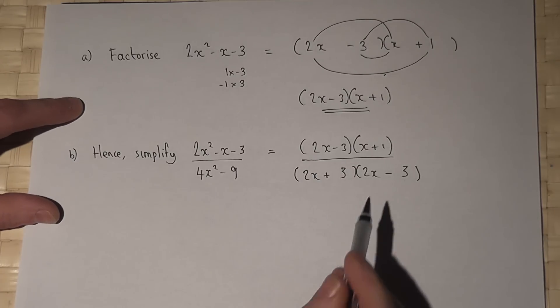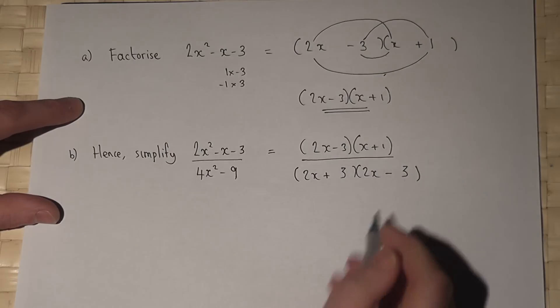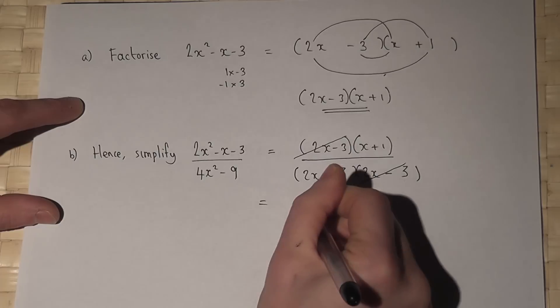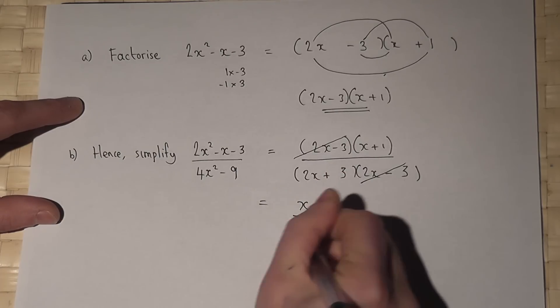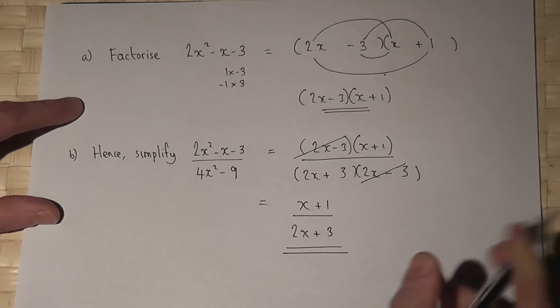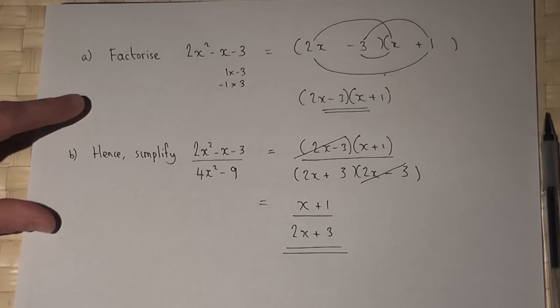And if you observe here, these two factors are the same. So I can cancel out the two factors, and I'm left with x plus 1 all over 2x plus 3.